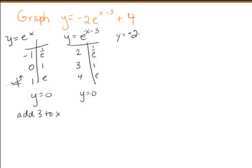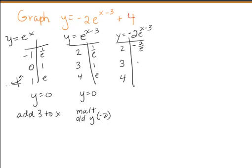My next step is to do this function. What is this doing? It's multiplying my old y times negative 2. So this time, I don't change the x values, and I multiply the old y values by negative 2. So we get negative 2 over e, negative 2, and negative 2e. I'm multiplying my y values by negative 2, but 0 times negative 2 is still 0, so my asymptote is still y equals 0.